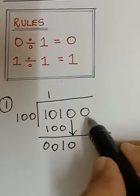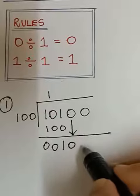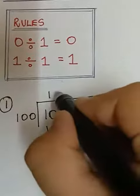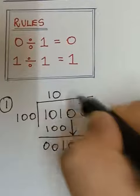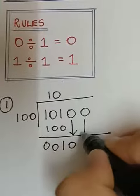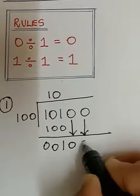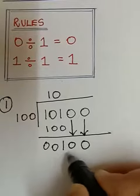So for that you must bring this 0 also down. So in order to bring this 0 down we have to write a 0 over here and then bring this 0 down as we do in normal division. So when you bring it becomes 100.